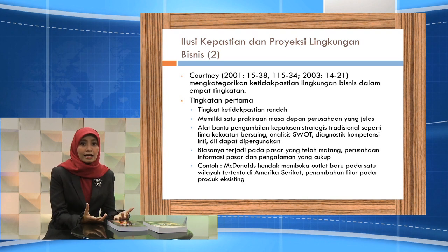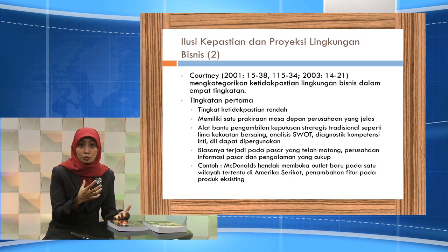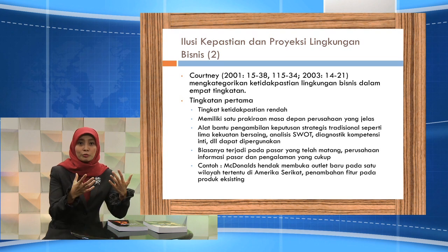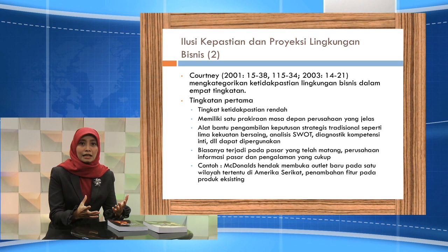Kondisi tingkatan pertama ini biasanya terjadi pada pasar yang telah matang sehingga fluktuasi lingkungan bisnis dapat diminimalisir dan perusahaan memiliki informasi pasar dan pengalaman yang cukup. Contoh dari tingkatan pertama adalah ketika McDonald's hendak membuka outlet baru di satu wilayah tertentu di Amerika Serikat, di mana hal itu bukan sesuatu yang baru sehingga mereka bisa memprediksi lingkungan bisnisnya. Contoh lain adalah penambahan fitur dari produk existing.